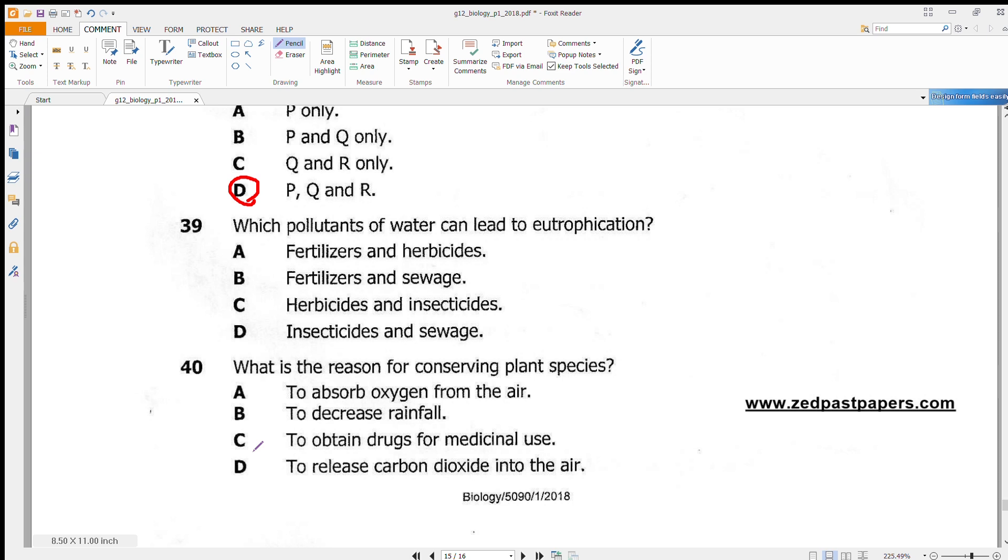Question 39: Which pollutants of water can lead to eutrophication, or in other words, the increase of bacteria and algae in water? Those would only increase if there is a lot of food for them to eat, and these foods would come from fertilizers and sewage. So our answer here would be B.